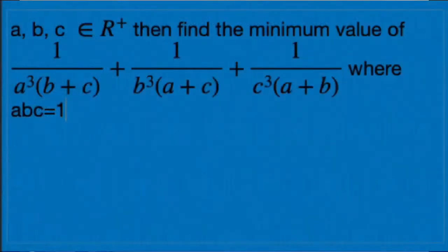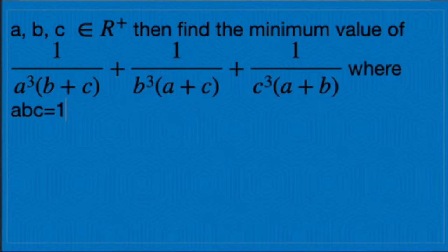The next problem: a, b, c belong to ℝ⁺. Find the minimum value of 1/(a³(b+c)) + 1/(b³(a+c)) + 1/(c³(a+b)), where abc = 1.